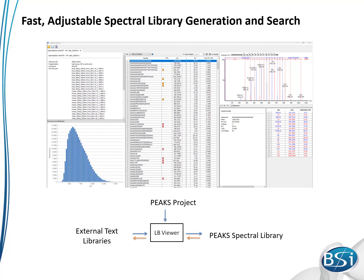New spectra can be added to the library as you receive them. Only the required information is needed, such as the M over Z, retention time, iMobility details, and the peak list. So it is very easy to manipulate.